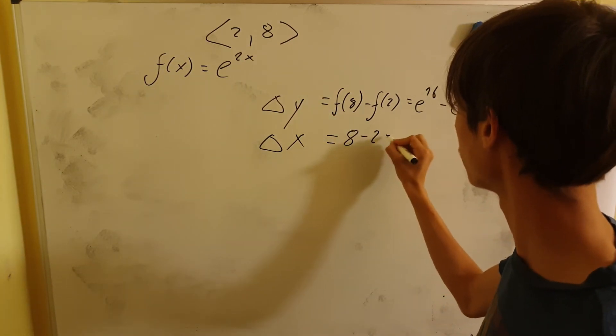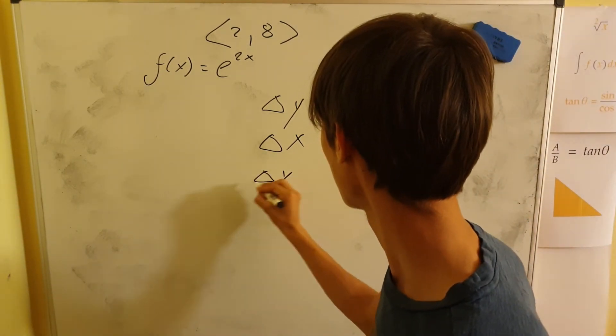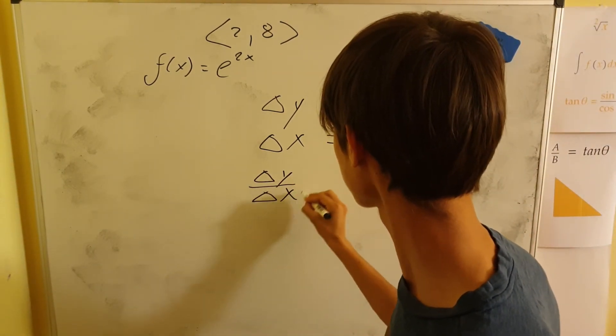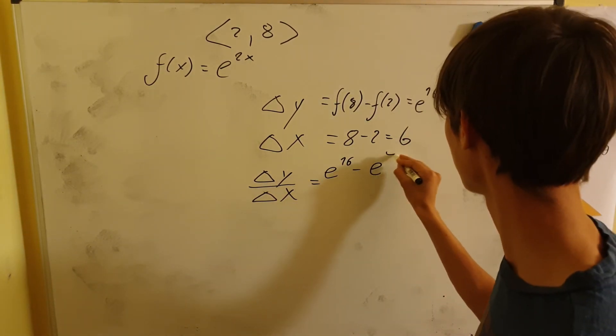So our slope of this secant line is going to be delta y over delta x, as I said. And that is going to be e to the 16th power minus e to the fourth power, over six.